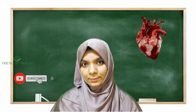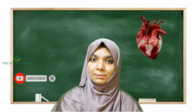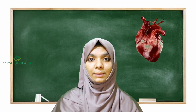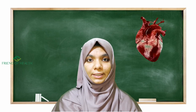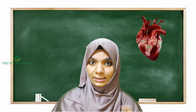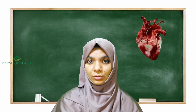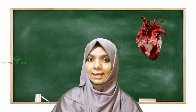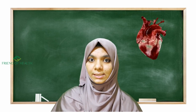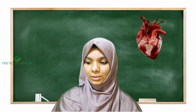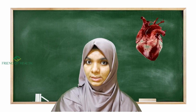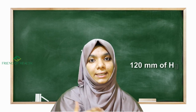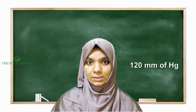Systolic pressure is the maximum pressure exerted in the arteries during systole — the contraction phase of the cardiac cycle. We know the cardiac cycle has a systolic phase and a diastolic phase. The maximum pressure exerted in the arteries during contraction is the systolic pressure. Normal systolic pressure is 120 mmHg.